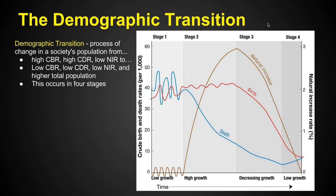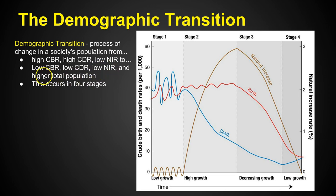The demographic transition is the process of change in a society's population — from a state where we're seeing a lot of people being born and a lot of people dying with not very much growth overall, to a state where not very many people are being born, not very many are dying, and we're still not seeing much population growth because we've already built up a high population by going through four stages.